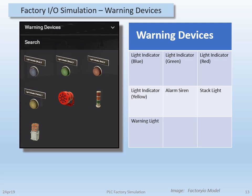Under the warning device category, we have our indicators again, but with the addition of a warning siren, a three-stack pole light, and a rotary yellow warning light.